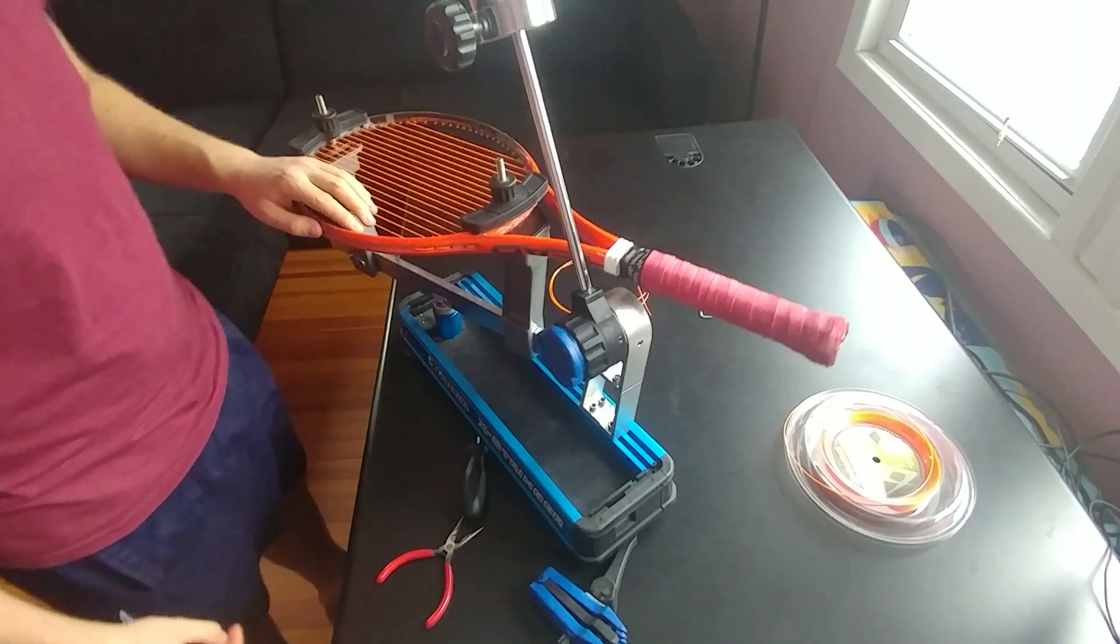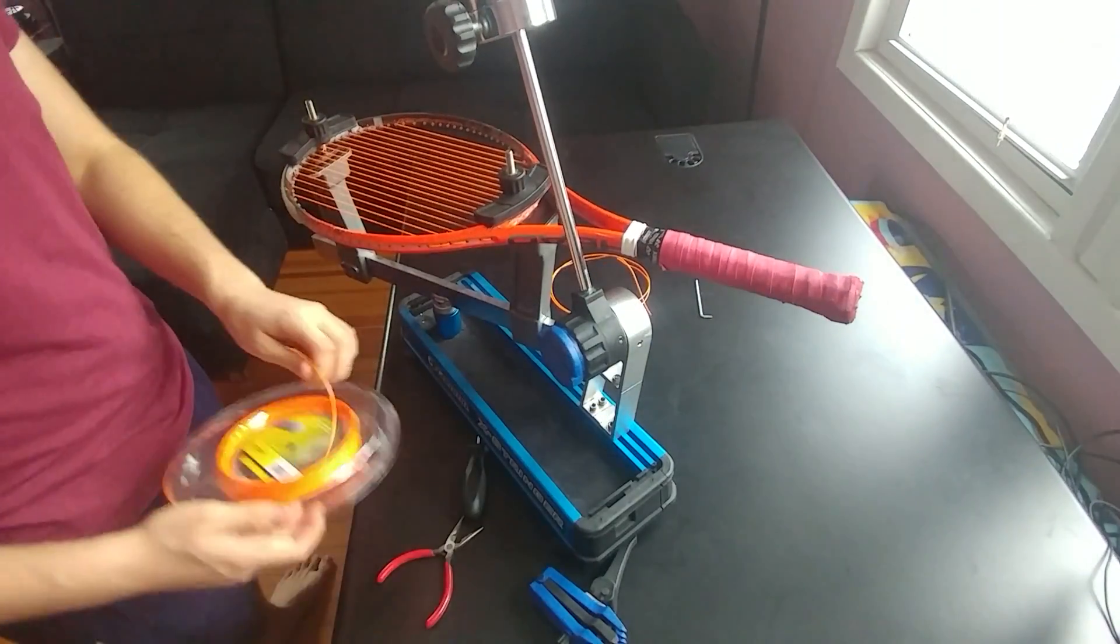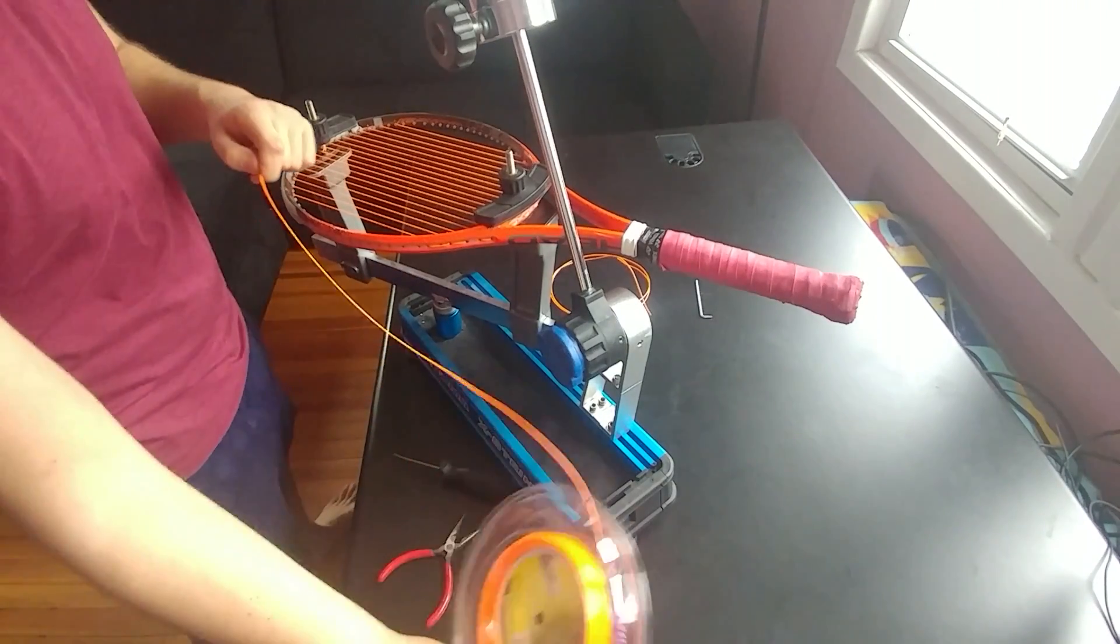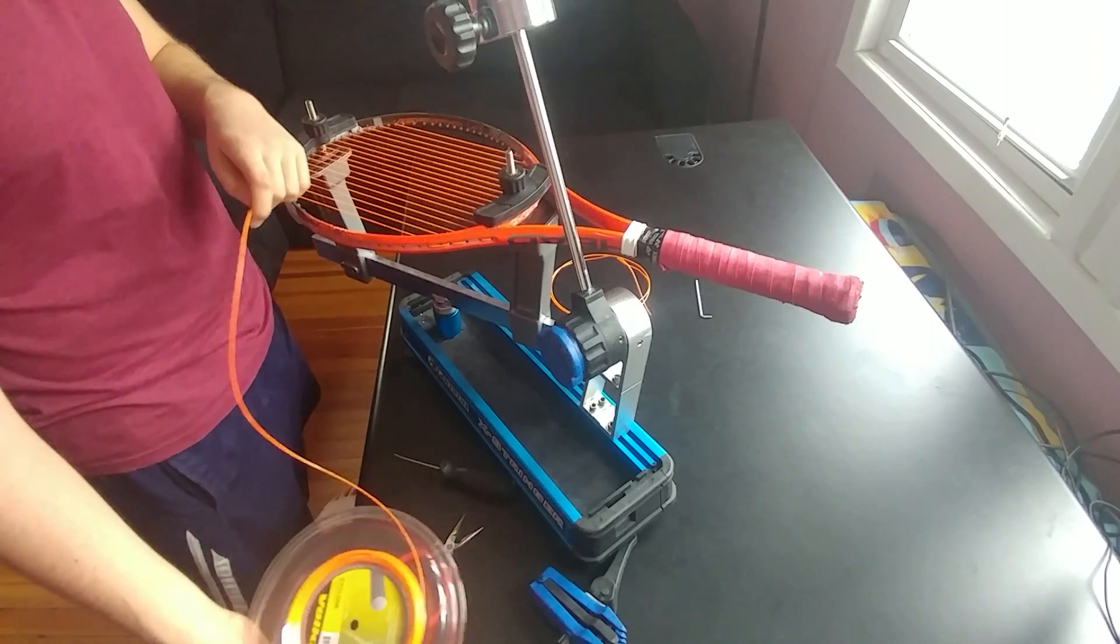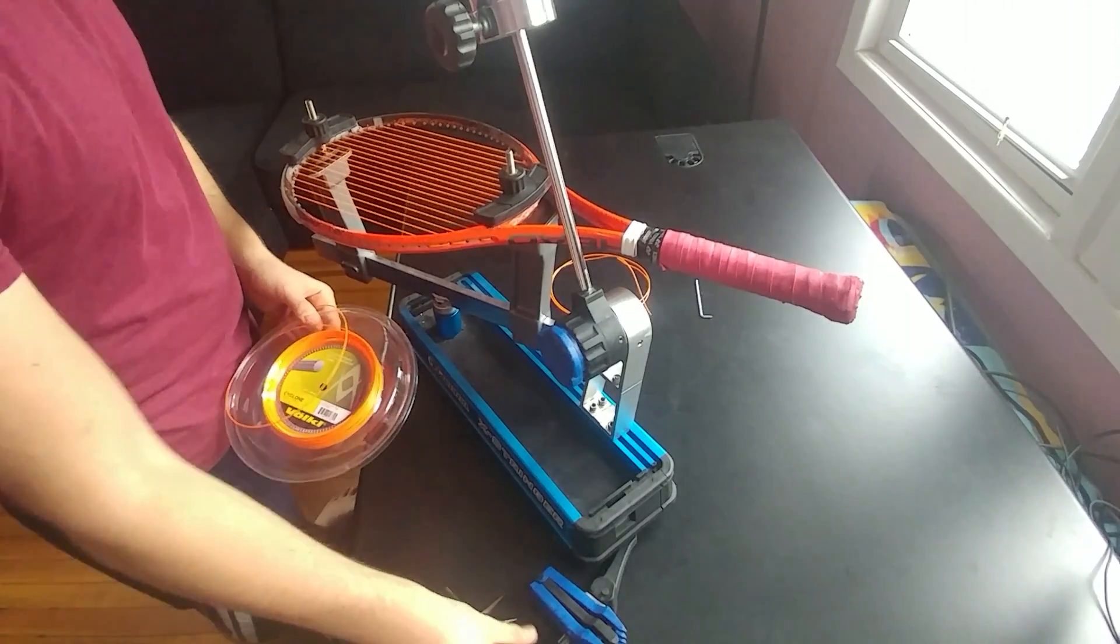Mains are done, now we're gonna move on to crosses. So to do the crosses you do the same thing initially with what you do with the mains but you do it 20. Most rackets now are 16 by 19 so you would do 19 in your case. I usually do one for good measure so I'm gonna do 21 times.